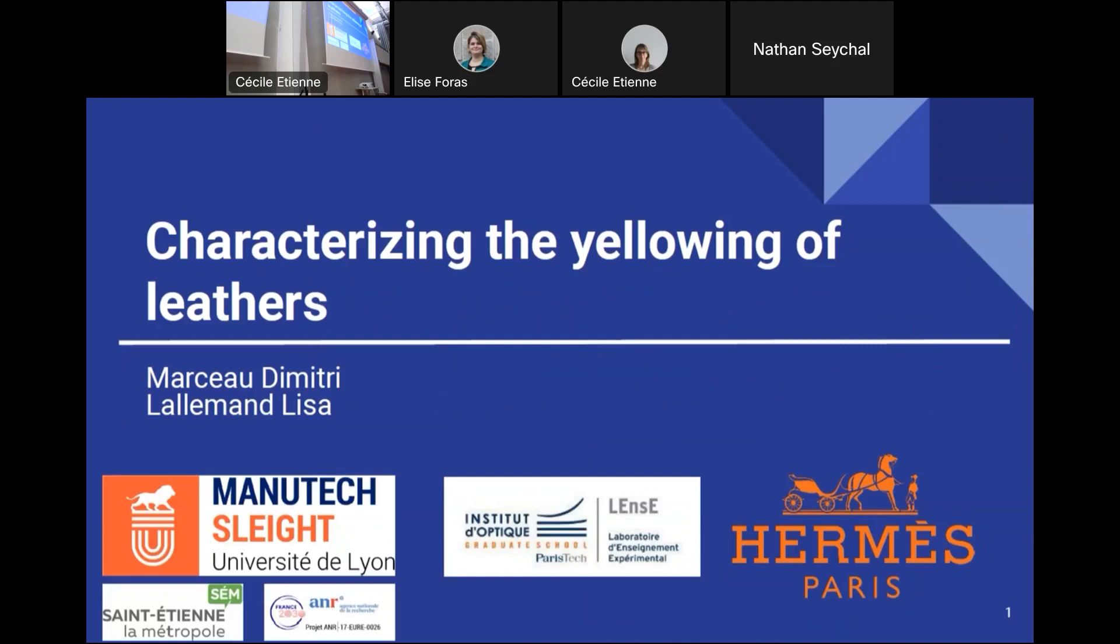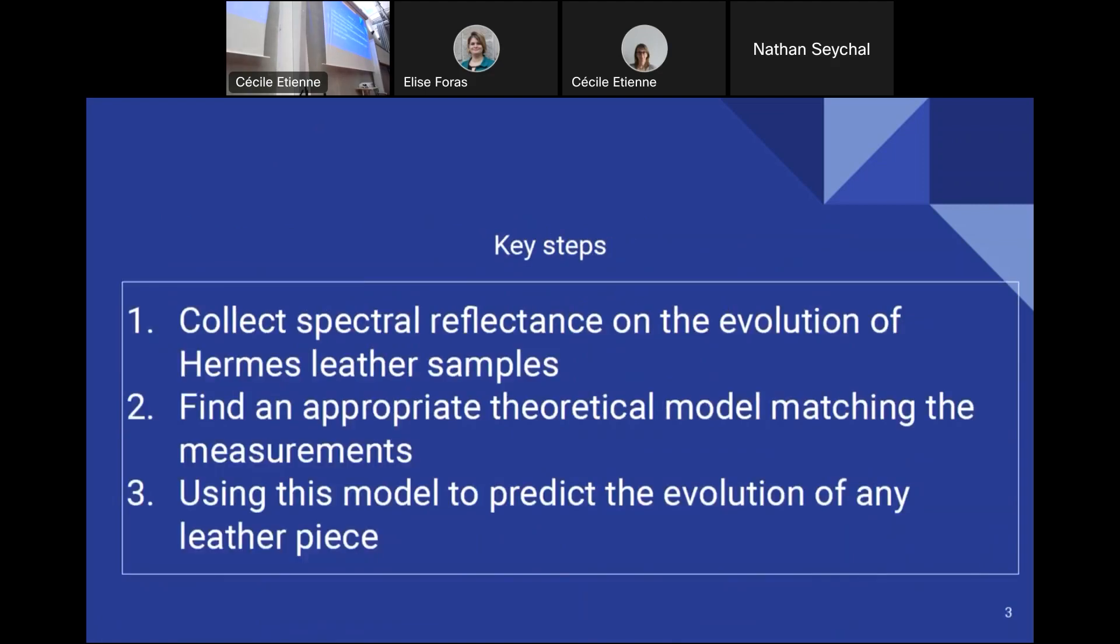So to solve this problem, we worked in three steps. The first one was the optical study of samples which were directly sent by Hermès. The second step was finding a theoretical model which allows us to, in the first step, predict how any piece of leather will yellow.